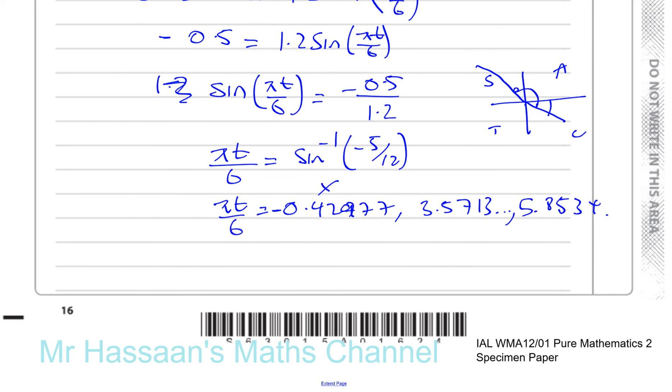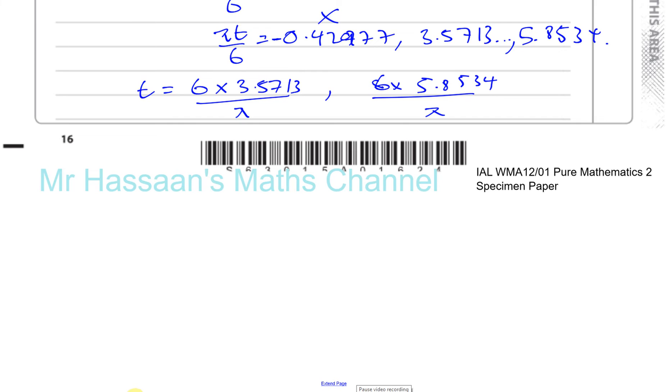This is not going to be part of the solution because it's going to be negative. So our time is going to be 6 multiplied by 3.5713 divided by pi, and 6 times 5.8534 divided by pi. So those will be our two terms. I'll write them down here.